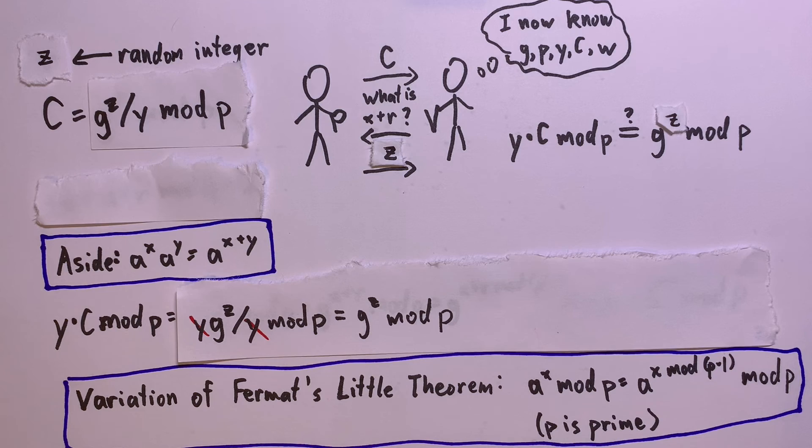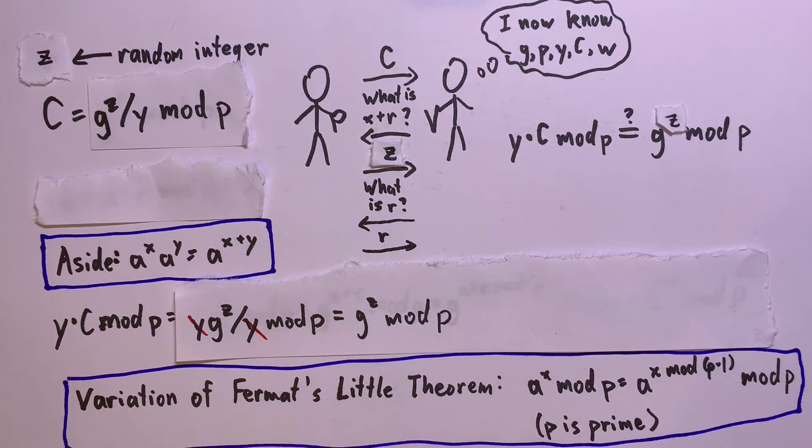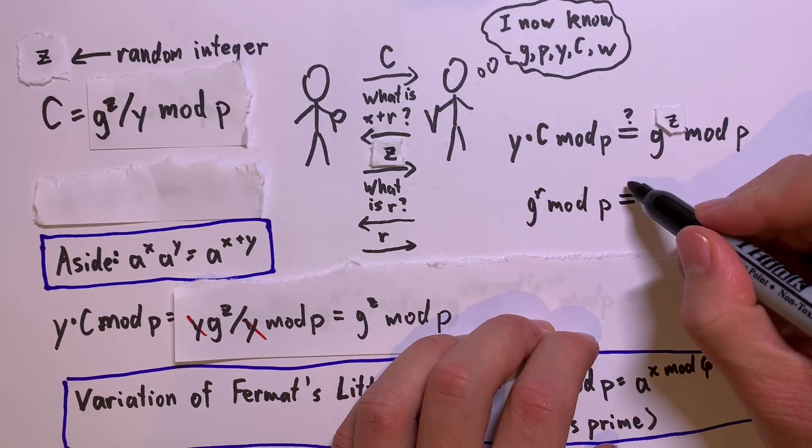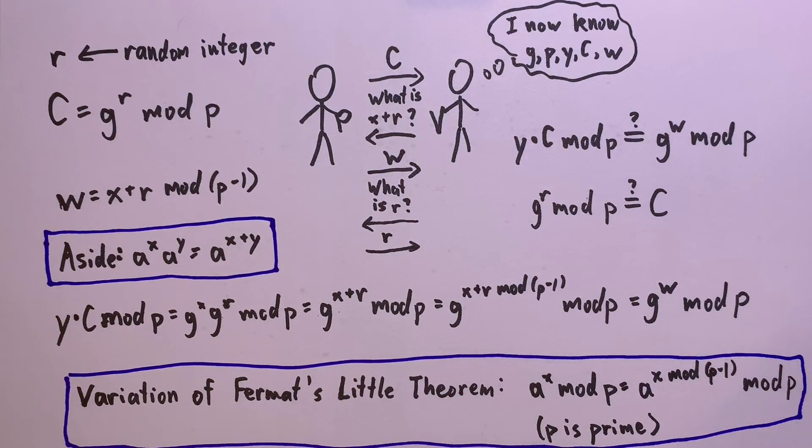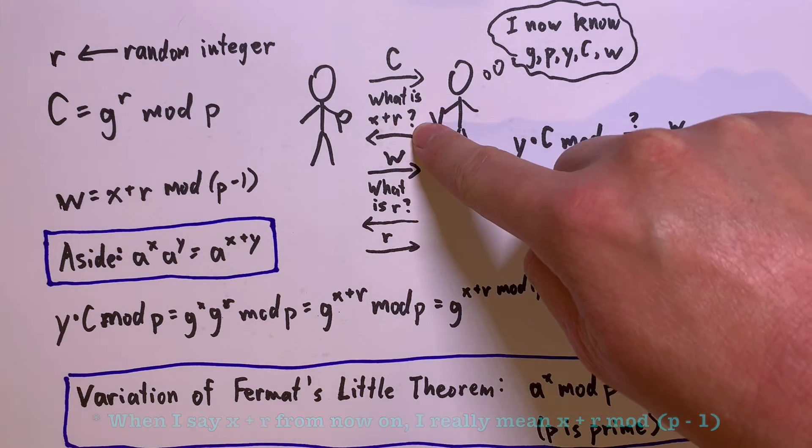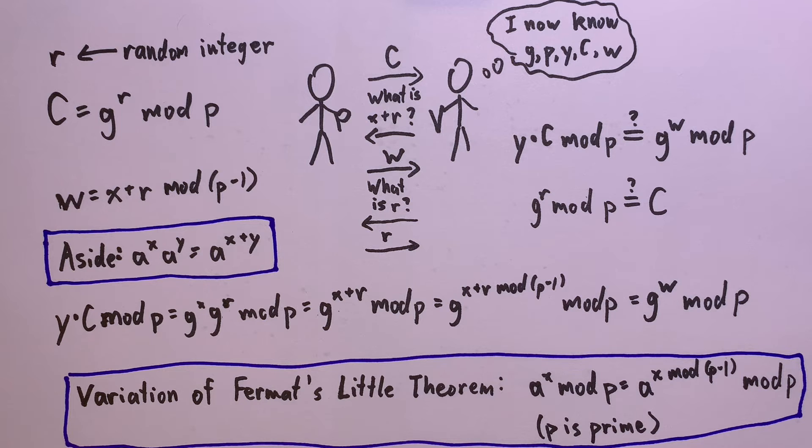To make sure you actually did choose a random r, the prover would also have to ask you what r was, so they can verify that g to the r mod p equals c. And you did just choose a random z that wasn't calculated by adding r to x. And yet, if the prover asks for both x plus r and r, then they now know what x is! Then the protocol is not zero knowledge, since the whole point was to keep x secret. Mission failed! We'll get em next time!